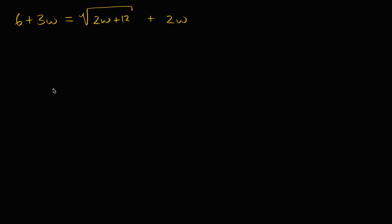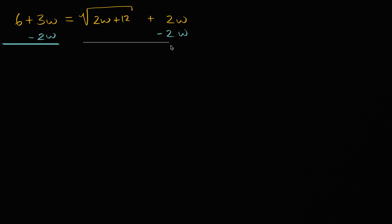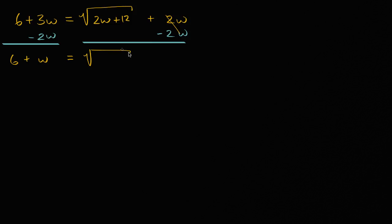Now let's work through this together. The first thing I'd like to do whenever I see one of these radical equations is isolate the radical on one side of the equation. So let's subtract two w from both sides to get rid of that two w from the right hand side. On the left hand side, I am left with six plus three w minus two w. Three of something, take away two of them, you're going to be left with w. So six plus w is equal to the square root of two w plus 12.